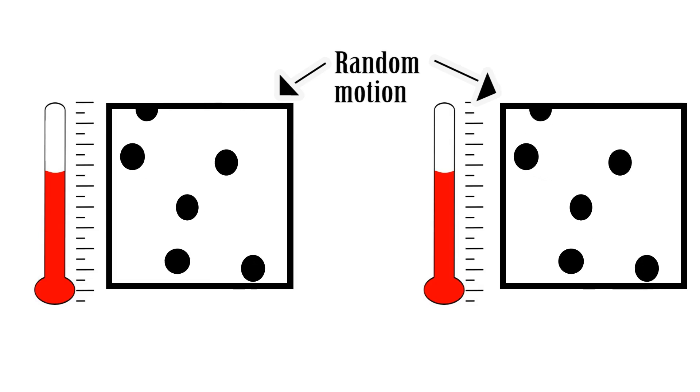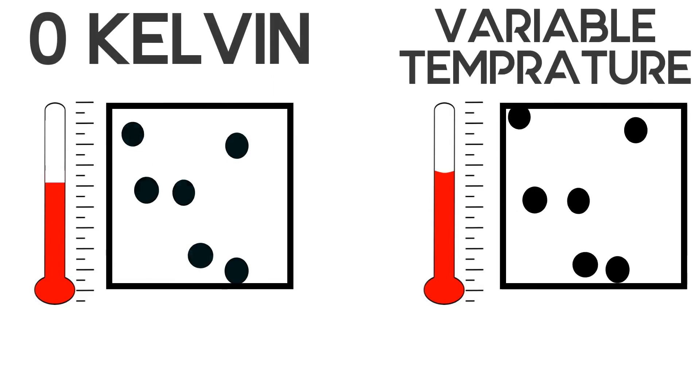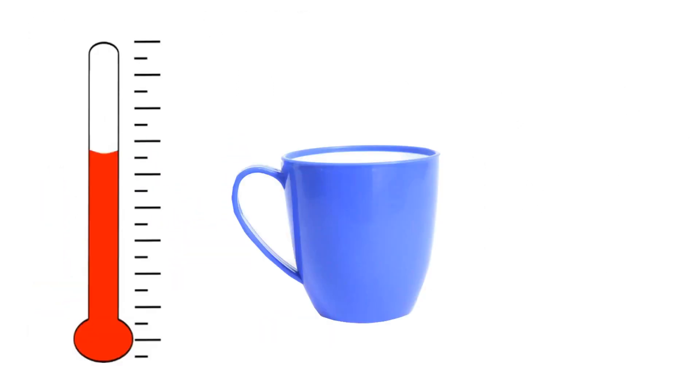Entropy, in simple words, is the measure of randomness. And the third law of thermodynamics says that the entropy of a pure substance must be zero at zero Kelvin. Let's see why.